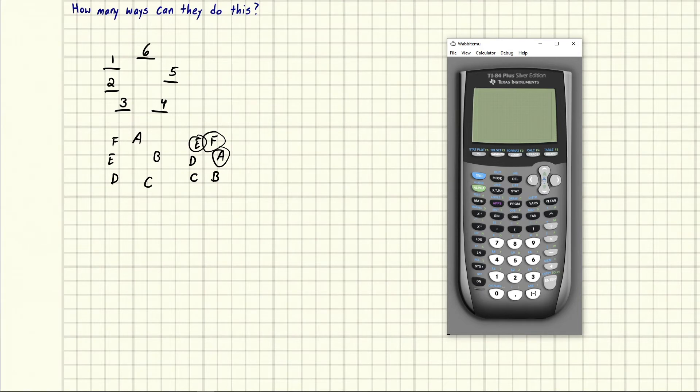So what we're going to do is we can set a reference. We could say, let F be our reference. And so if F is the reference, we can unravel the circle. So it would become like this: F, A, B, C, D, E. But F has to be first because it's our reference point. So that leaves us with one, two, three, four, five spots left.